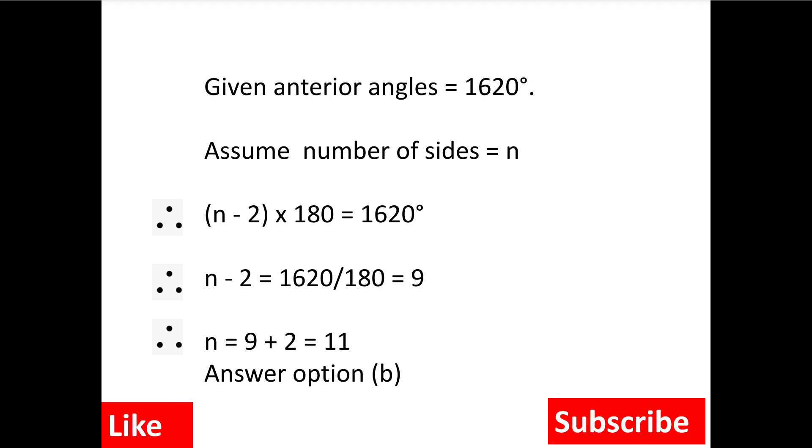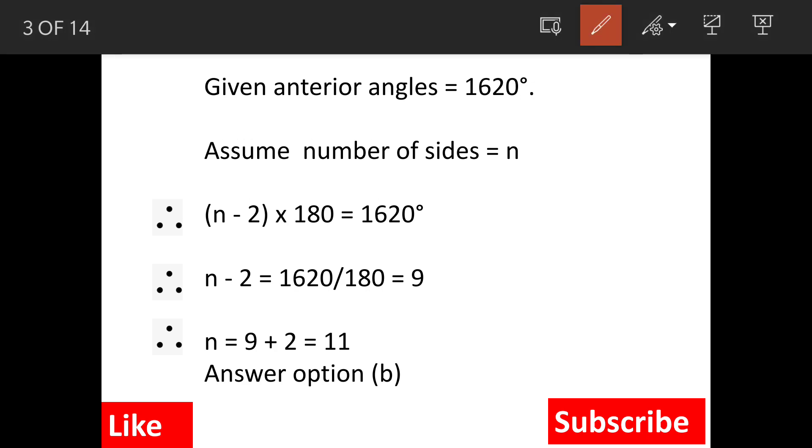So here it is given that total angles are 1620. So we put up this value in this formula: (n minus 2) times 180 equals 1620. So when we solve this, you will get n as 11. The answer is option b.